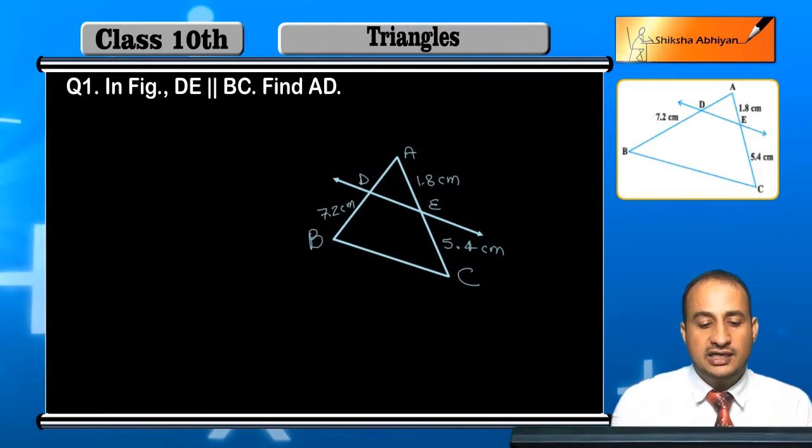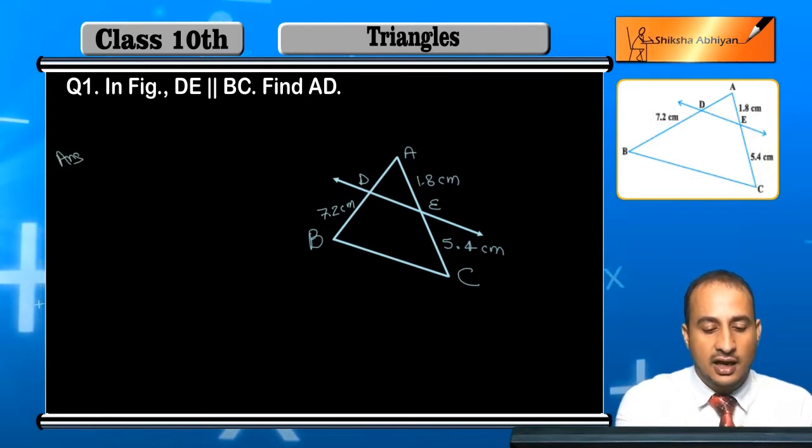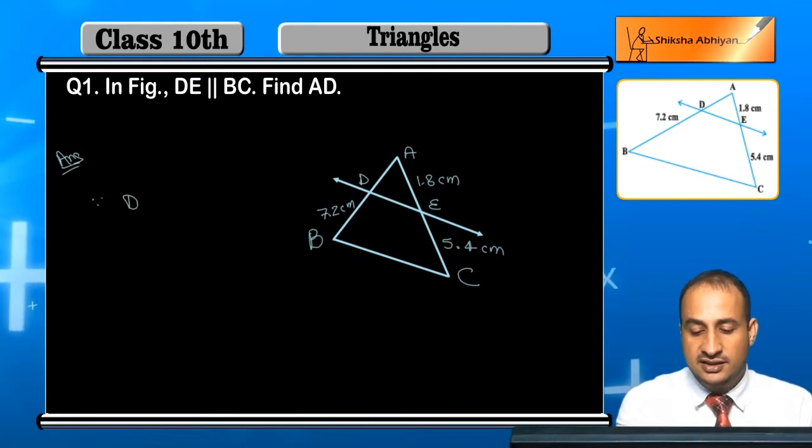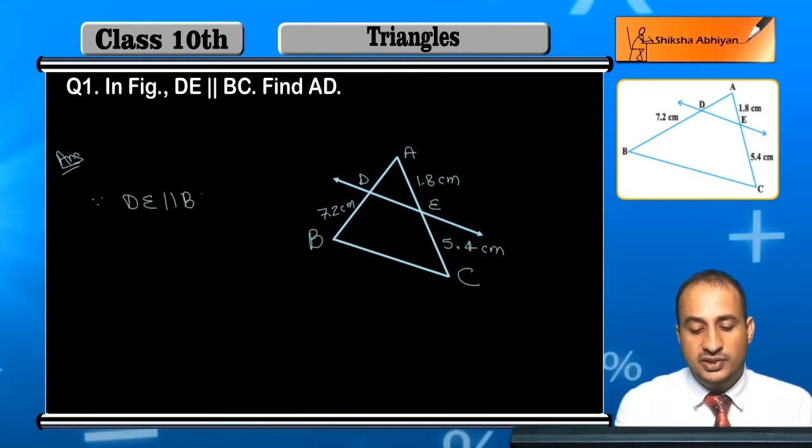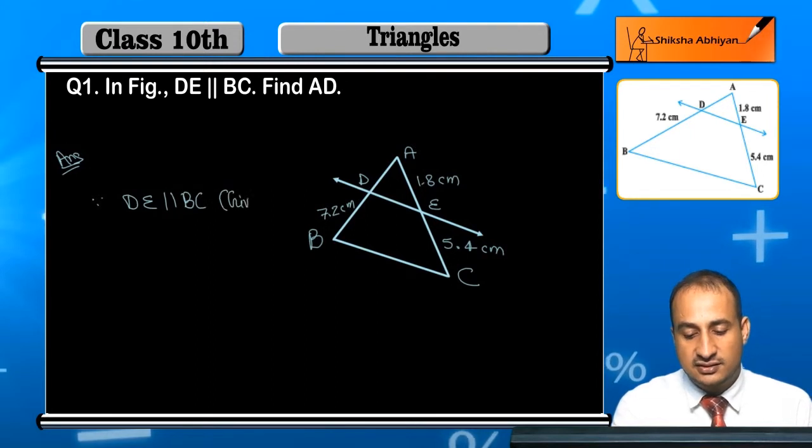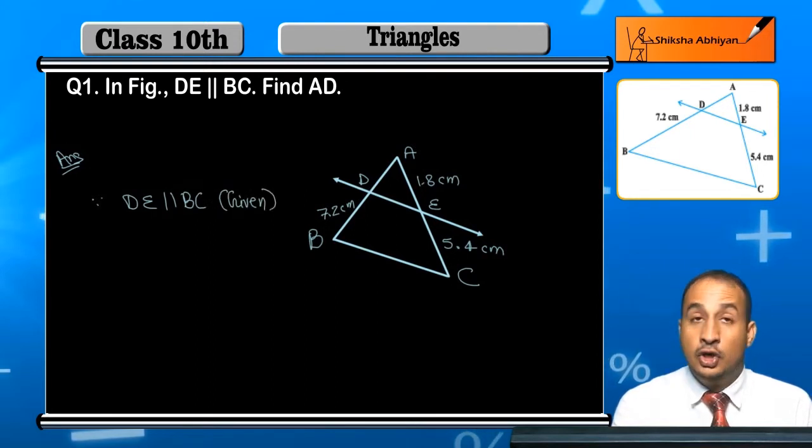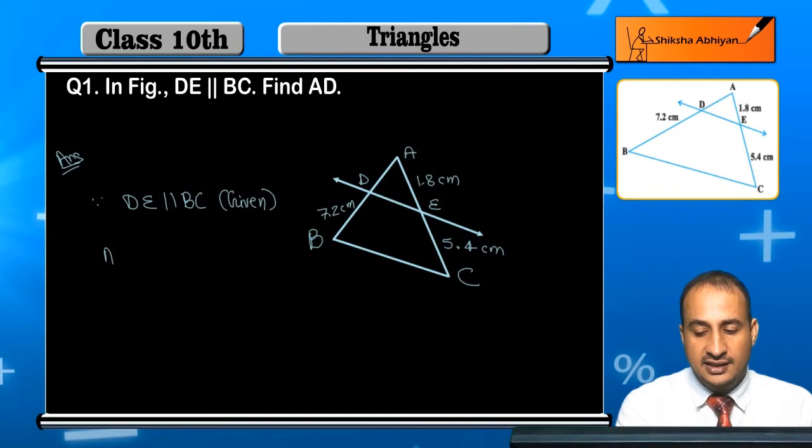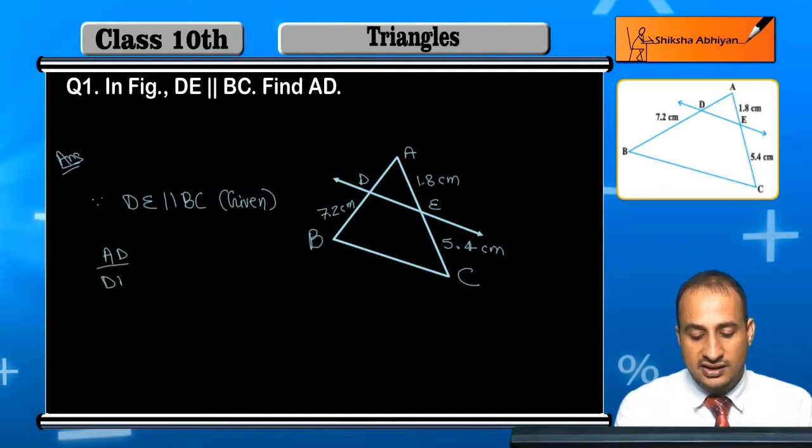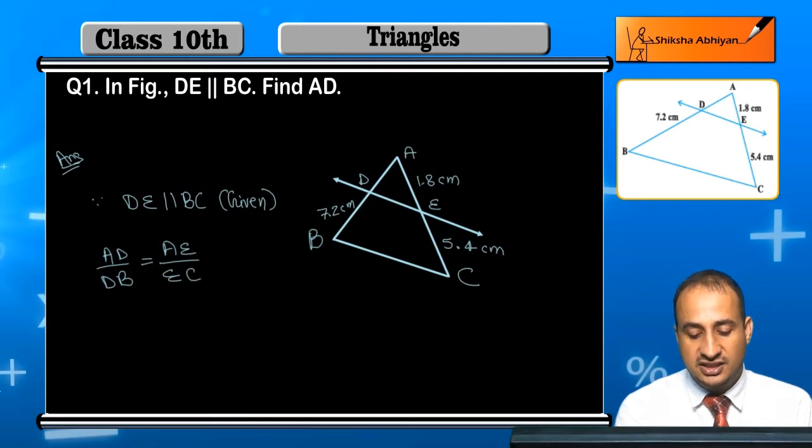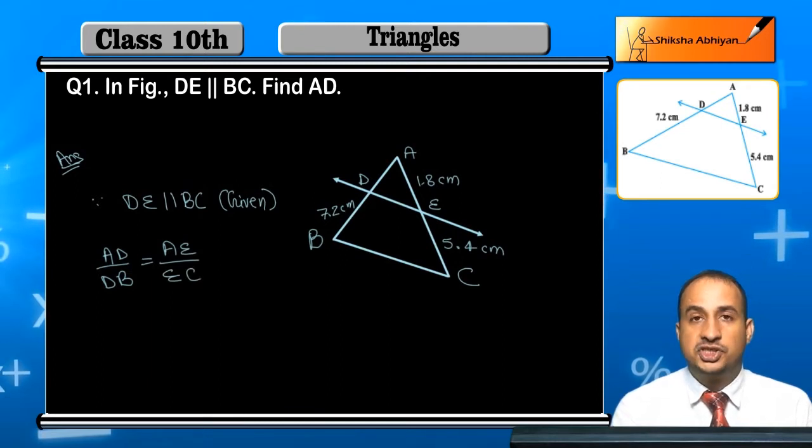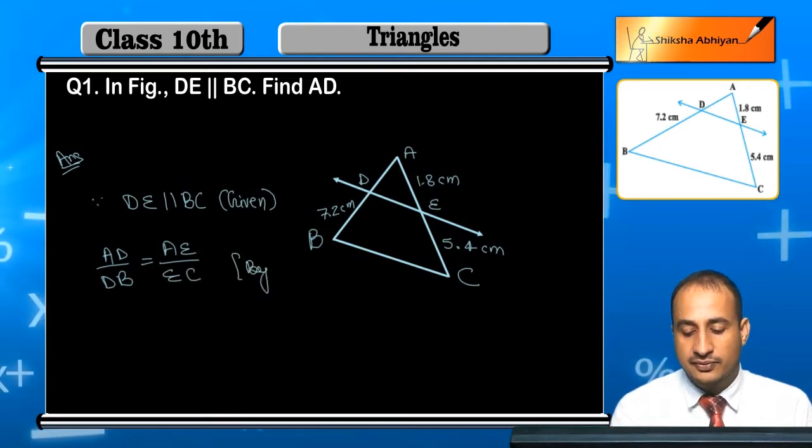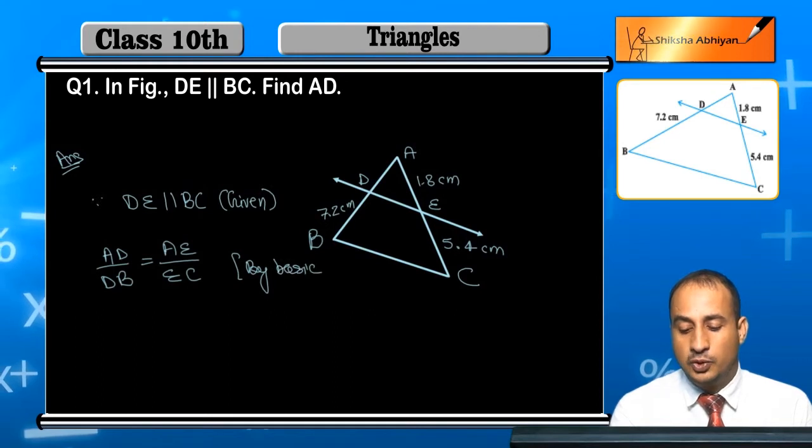So I have again created the figure here students. See this figure - since DE is parallel to BC and this is given, I can write AD upon DB is equal to AE upon EC by Basic Proportionality Theorem.